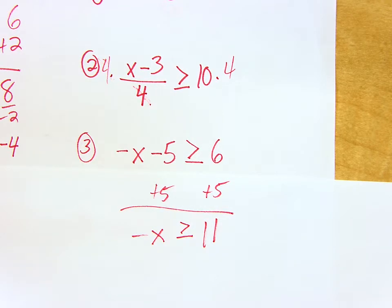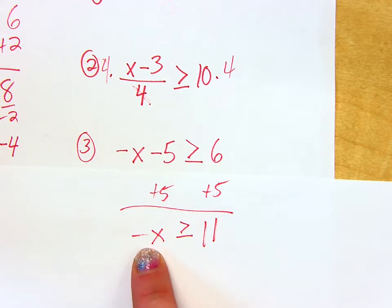But now I have negative x is greater than or equal to 11. I need positive x. So how do I get that? Brenna, how do I turn this into a positive x? Devin's going to help you. Go ahead. Multiply by negative 1? Yeah. If you multiply or divide both sides by negative 1, that'll turn that positive.